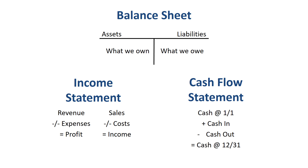Return on Assets links together information from two of the three main financial statements, by taking the bottom line of net profit from the income statement, and the left hand side of assets from the balance sheet.